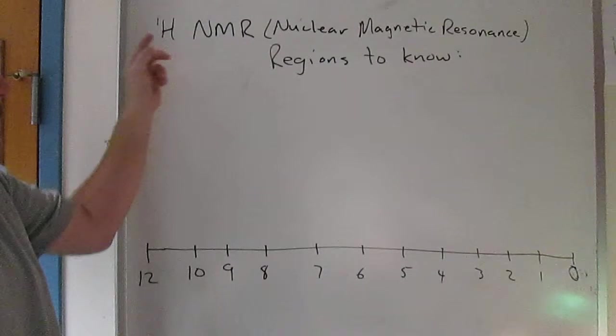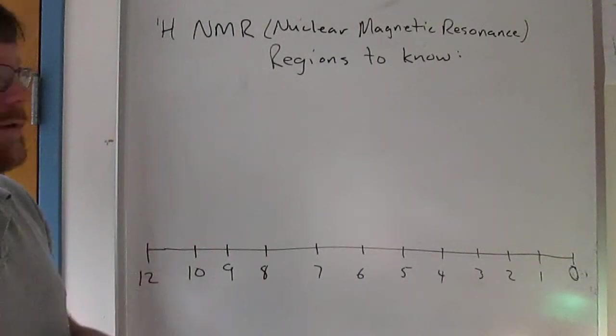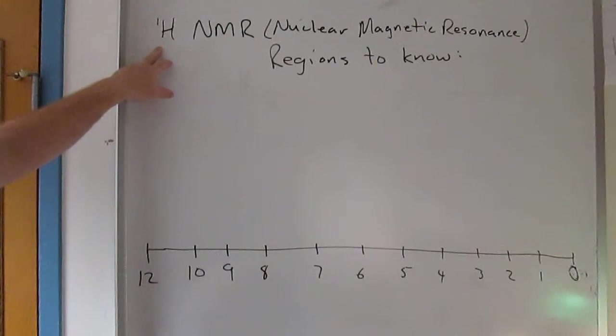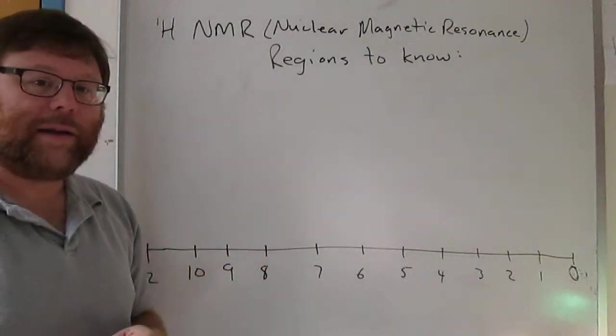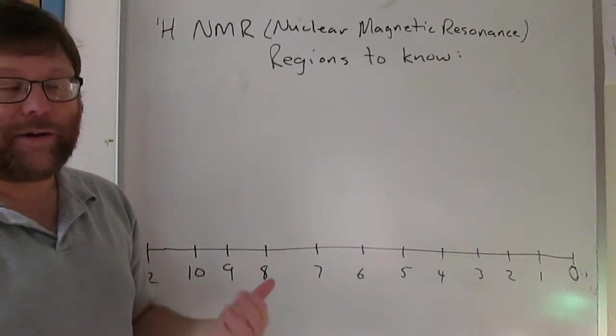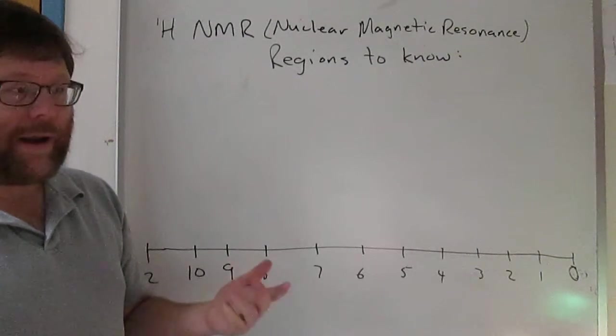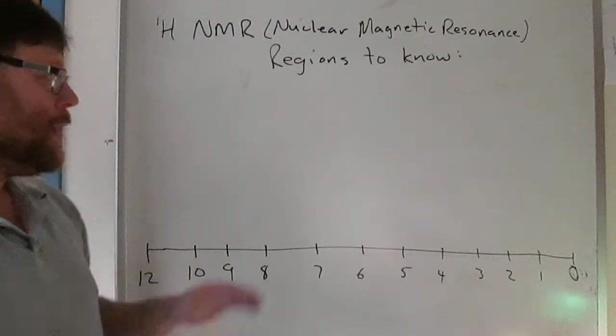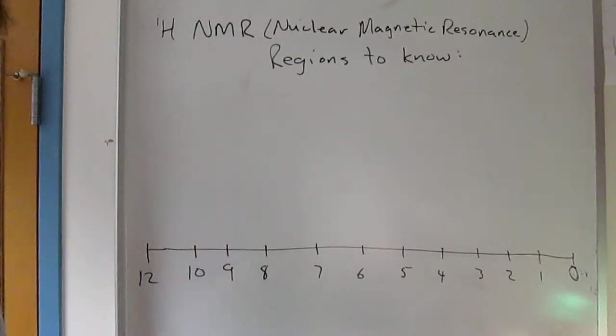So that's NMR, and you have to indicate which nucleus you're talking about. This will be a proton NMR spectrum. We'll also encounter carbon-13 NMR in this class. There are a lot of other nuclei you can look at - fluorine, nitrogen, sulfur - but we're going to focus on proton and carbon.